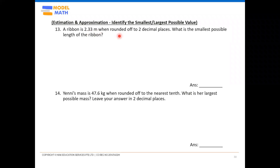A ribbon is 2.33 meters when rounded off to two decimal places. What is the smallest possible length of the ribbon? For such estimation and approximation questions, you have to understand that 2.33 meters is not the original or actual value, but rather this is already the rounded value. So we don't know what the actual value is — there are so many actual values that could be rounded to 2.33 — but what we want is the smallest possible actual length.